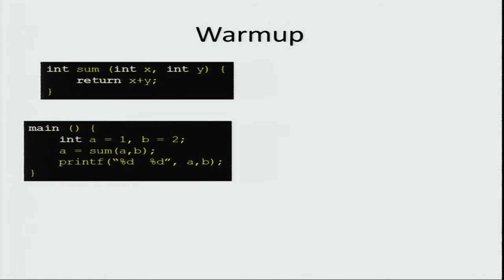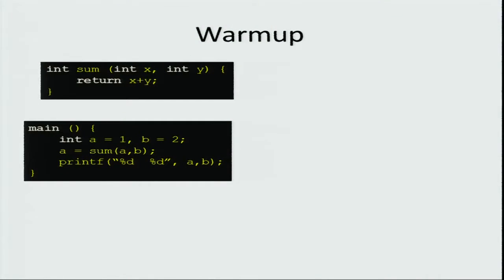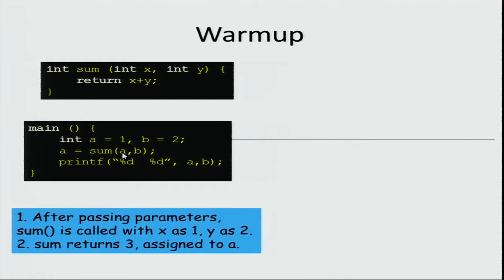Let us start by considering a very simple example. I have a simple function called sum which just adds two variables x and y, which are integers; therefore the return value is also an integer. Inside the main program I will call a equal to sum of a, b, where a is 1 and b is 2. Sum is called with x as a, which is 1, and y as b, which is 2.